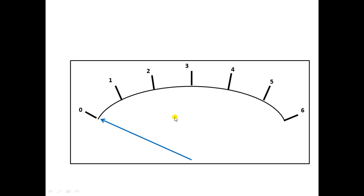When the ammeter is connected in a circuit in which current is flowing, the pointer should deflect and indicate the magnitude of the current. The pointer has to move, and that moving or deflecting force — the deflecting torque — is provided by a system called the deflection system. This torque is also called the moving torque.